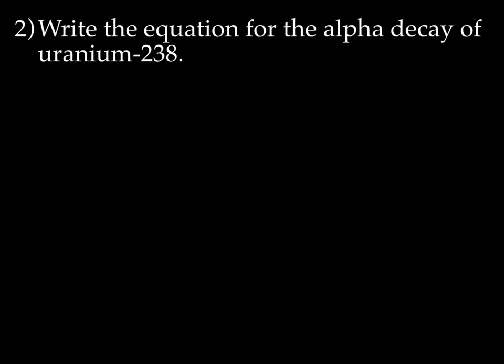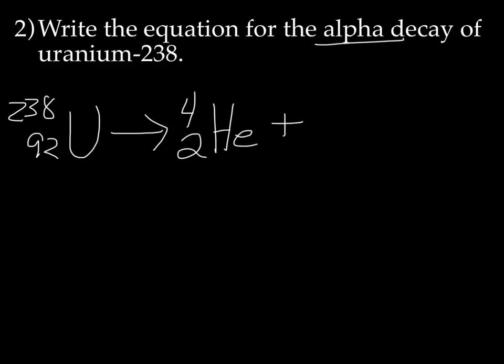Let's try another one. Write the equation for the alpha decay of uranium-238. So the symbol for uranium is U. We know the mass is 238 because it was given to us, and the atomic number is 92. So being this is an alpha decay, we know that uranium is going to decay into an alpha, which is 4, 2, He, and something else. So now we need to figure out the something else. You have 238 here and 4. So 238 equals 4 plus what? 234.